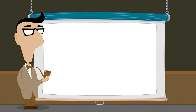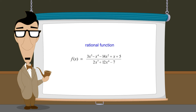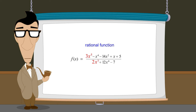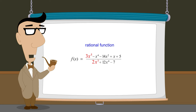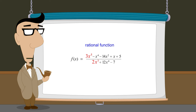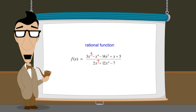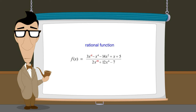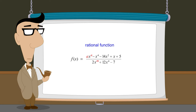In the previous lecture, we saw that given any rational function, the first step in determining its non-vertical asymptote is to examine the numerator and denominator's leading terms. Since when written in standard form the exponents decrease going from left to right, the leading terms will have the numerator and denominator's largest exponents. Let's call these exponents n and m, and the coefficients of the leading terms a and b.